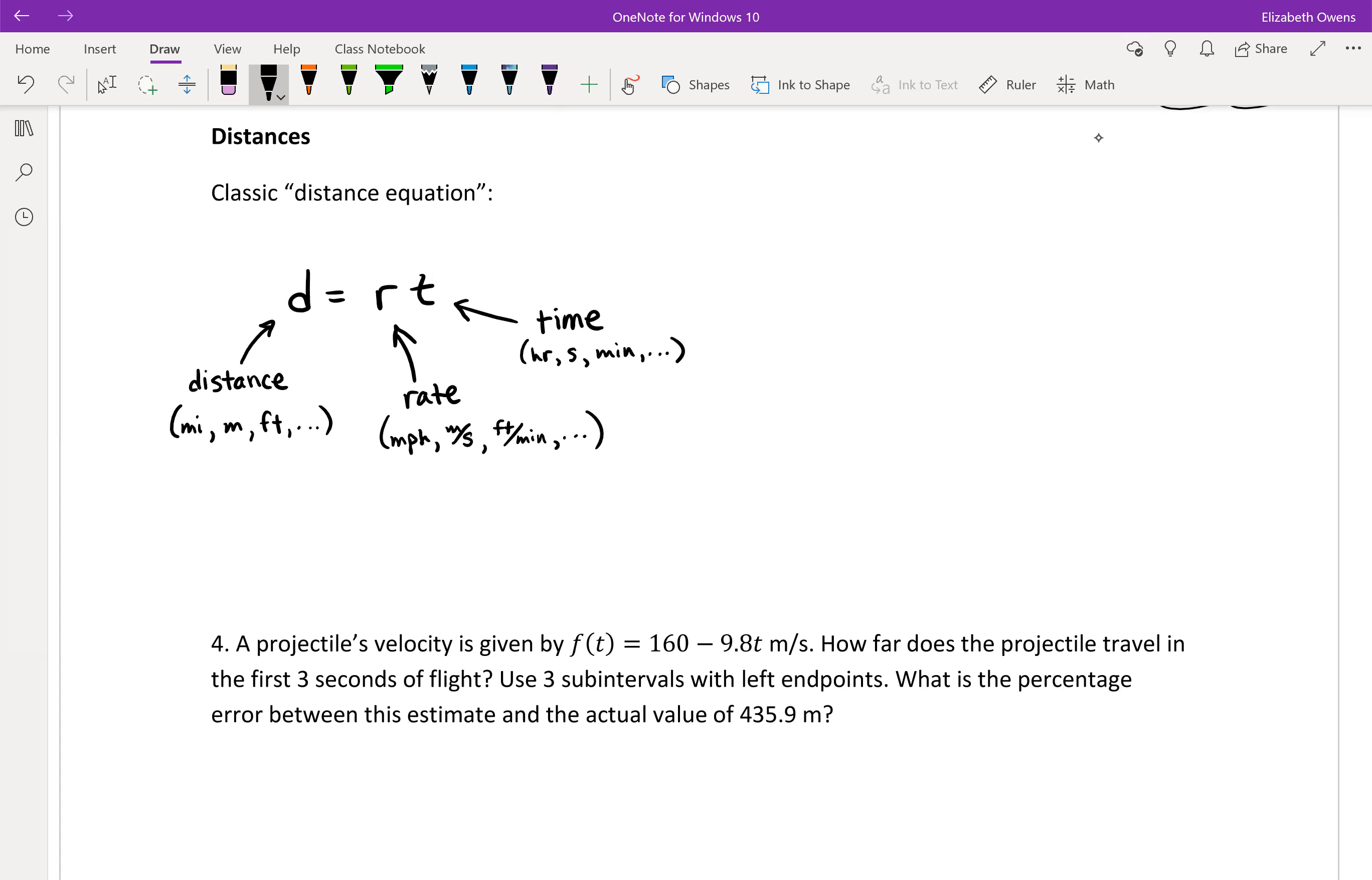Now, if we are thinking in terms of some terminology that we've heard in calculus so far, rate, we might know, could be replaced with something like speed or velocity. So you might see this equation written something like this sometimes. D equals VT. In terms of physical motion here, where V is velocity.